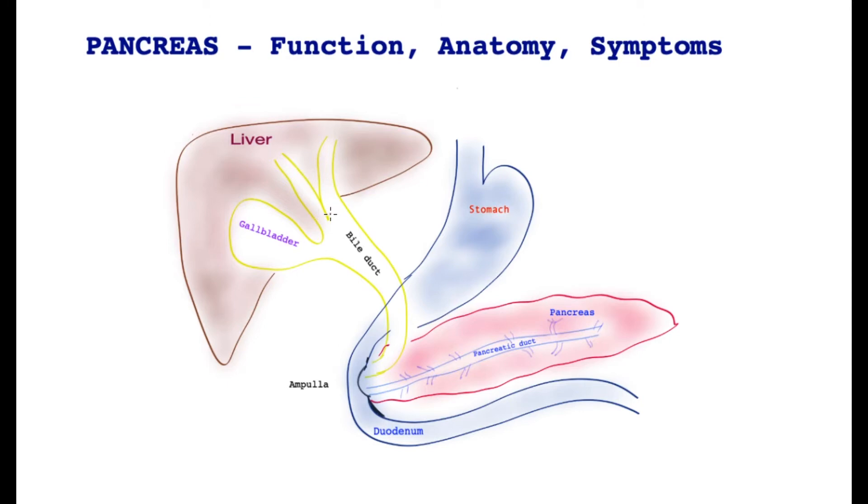The bile comes down these two tubes into the main bile tube. The bile tube has a connection, a bag connected to it called a gallbladder, and the bile then comes down the bile tube, traversing through the pancreas and emptying into the small bowel.